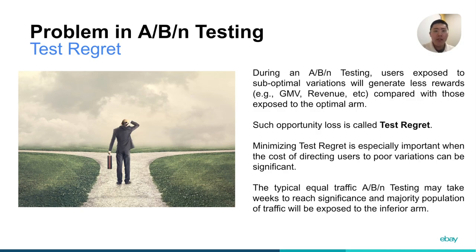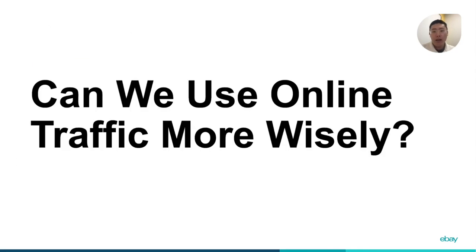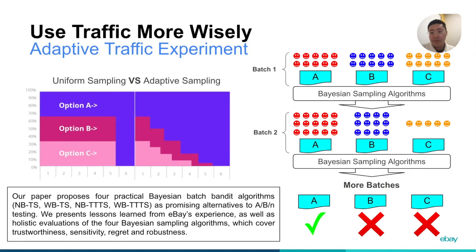Another common issue is test regrets. Using ABN tests with equal traffic split, the majority of the population will be exposed to an inferior arm. Can we use online traffic more wisely? The answer is yes. Instead of uniform sampling, adaptive sampling is a promising alternative.